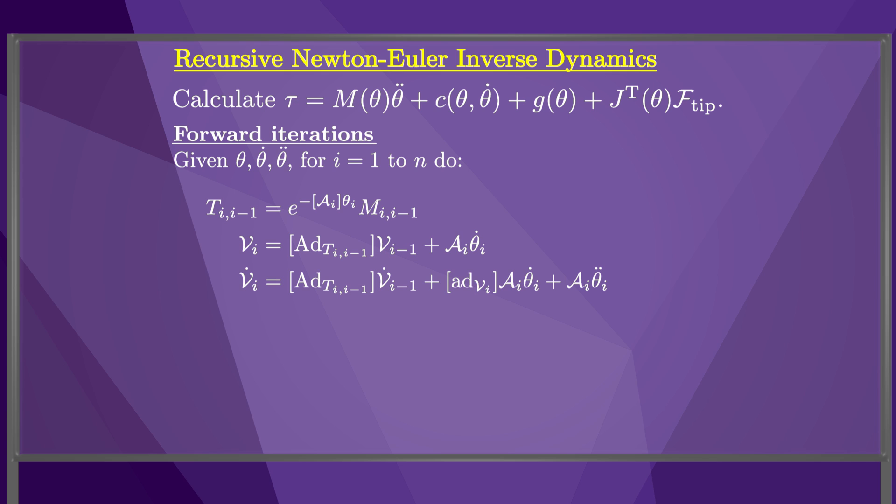The derivations of these equations can be found in the book. At the end of the forward iterations, we have the configurations, twists, and accelerations of all the links. The twists and accelerations are expressed in the center-of-mass frames i.